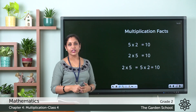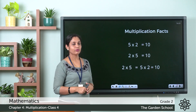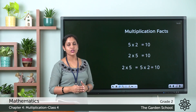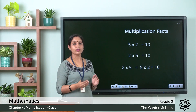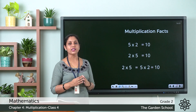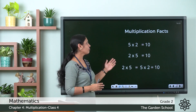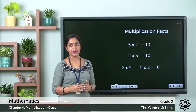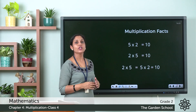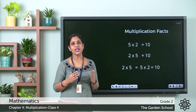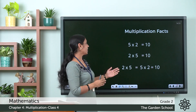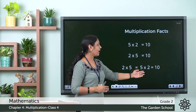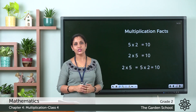Here in the second row you can see 2 × 5, where the order of the multiplicand and multiplier is changed. How much is 5 × 2? We have learned 5 twos are 10. And 2 × 5? 2 fives are also 10. So 2 × 5 = 5 × 2 = 10.